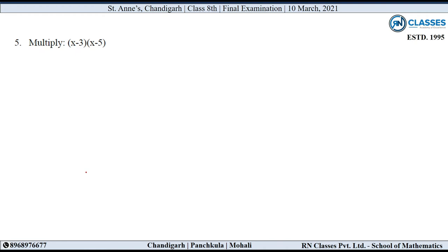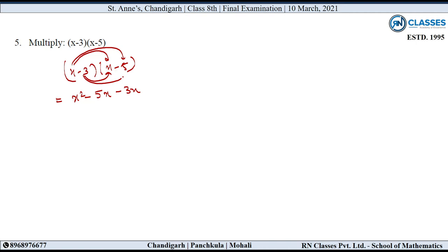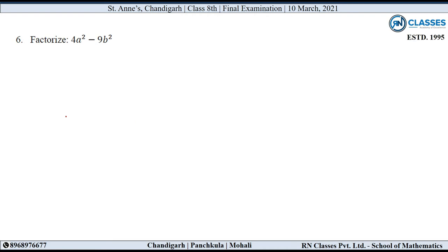Question number 5: Multiply x minus 3 into x minus 5. तो multiplication करनी है: x into x is x square, x into minus 5 is minus 5x, minus 3 into x is minus 3x, minus 3 into minus 5 is plus 15. Simplifying: x square, minus 5x minus 3x gives minus 8x, plus 15. यह है final answer.